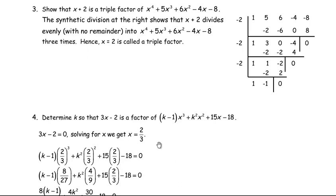Question three says: show that x plus 2 is a triple factor of the given quartic polynomial. Triple means it divides evenly three times. A common incomplete approach is using the remainder theorem alone — substituting negative 2 shows it divides evenly once, but doesn't show it goes in three times. That earns some marks but not full marks. You need to perform synthetic division repeatedly three times, each time getting remainder zero.